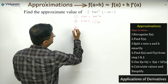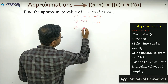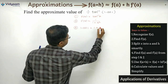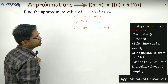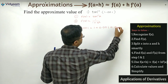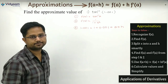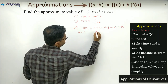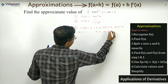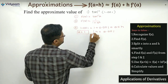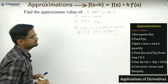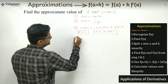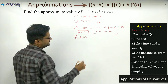Now going to step number 3: this value 1.001 — we split it smartly as 1 + 0.001. From this, one value is a and the other is h. So a = 1 and h = 0.001. We can box this. Immediately after, my aim is to find f(a) and f'(a).